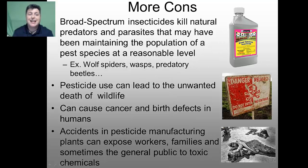An additional negative is that broad spectrum insecticides will actually kill natural predators and parasites that may have been maintaining the population of that pest species at very reasonable levels. For example, wolf spiders, wasps and predatory beetles all do a great job of eliminating certain pests. With their removal, the only way to eliminate your pest species is by applying more and more pesticide.